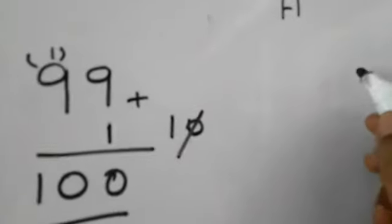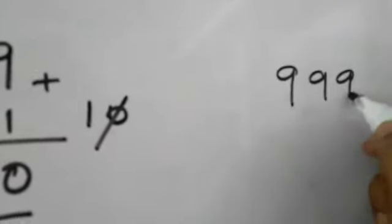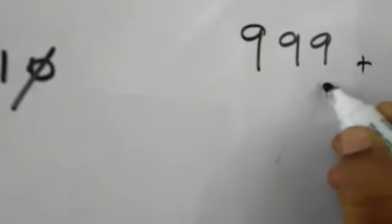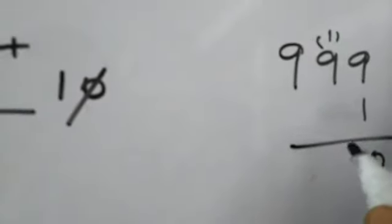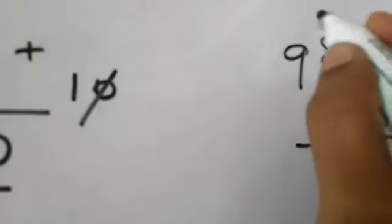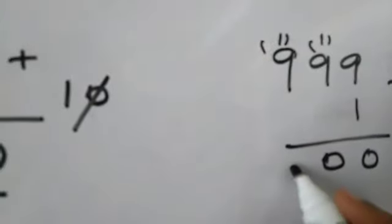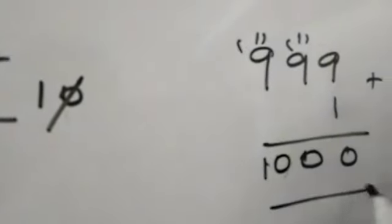Next, 999. Adding 1. 9 plus 1, 10. 1 here. 9 plus 1, 10. 1 here. 9 plus 1, 10. So total, 1, 2, 3, 4 digit number.